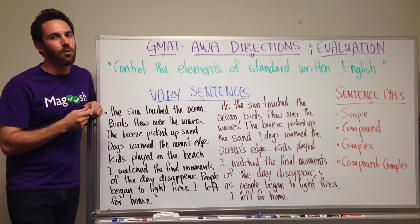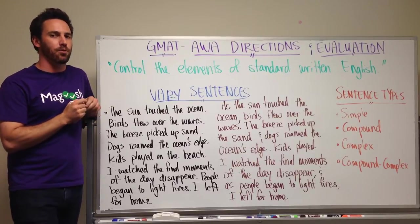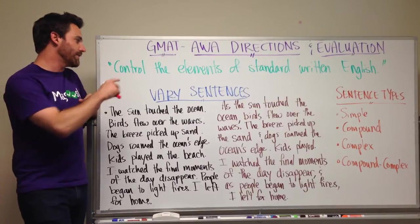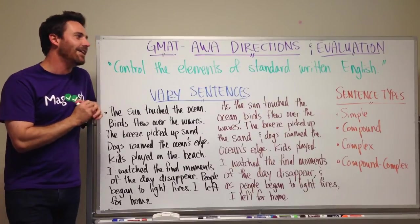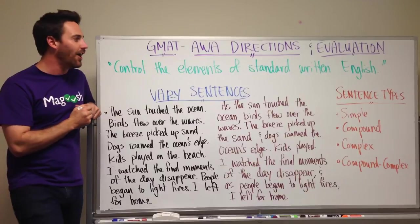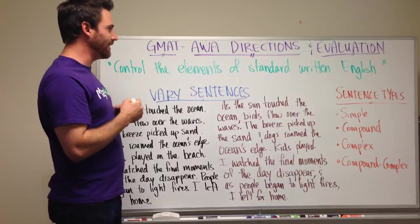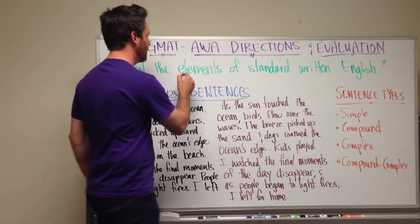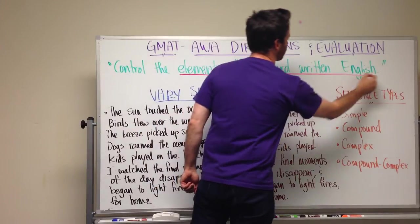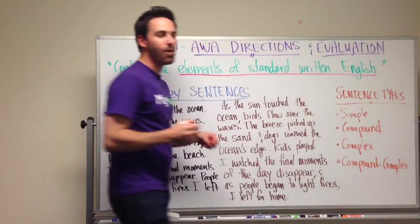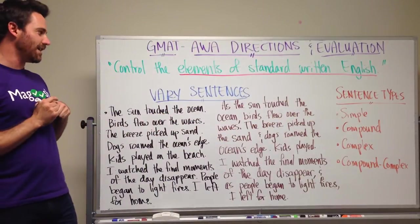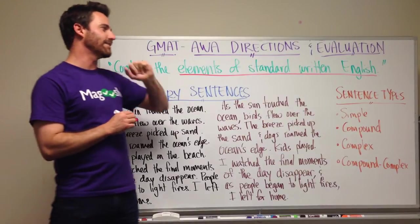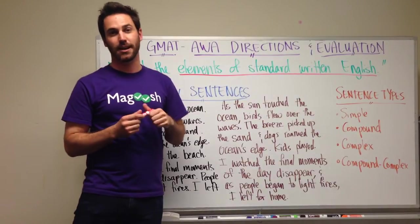Specifically, we're going to look at one bullet point of how you're going to be evaluated. That bullet point says: control the elements of standard written English. And some people wonder, what does that mean? What does it mean to control the elements of standard written English?